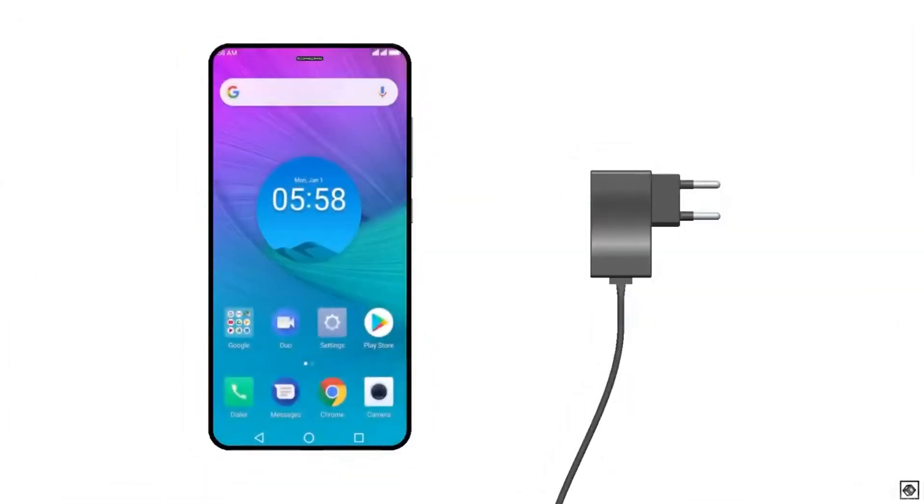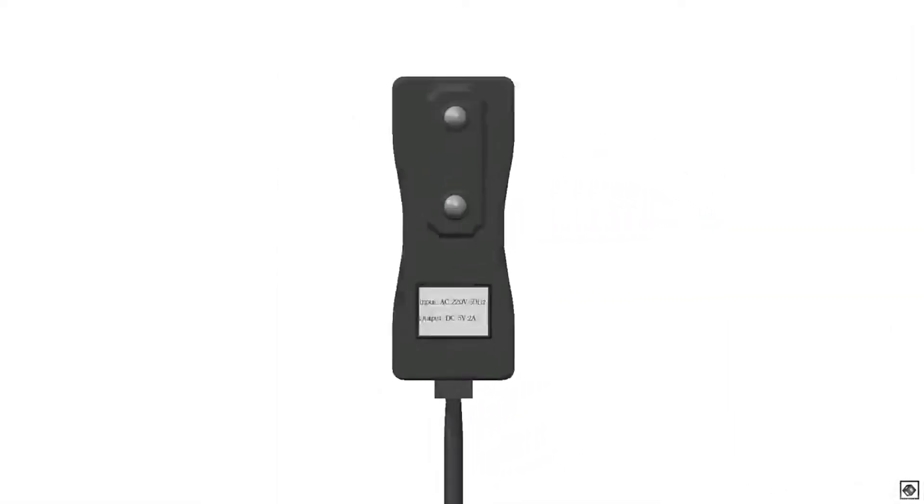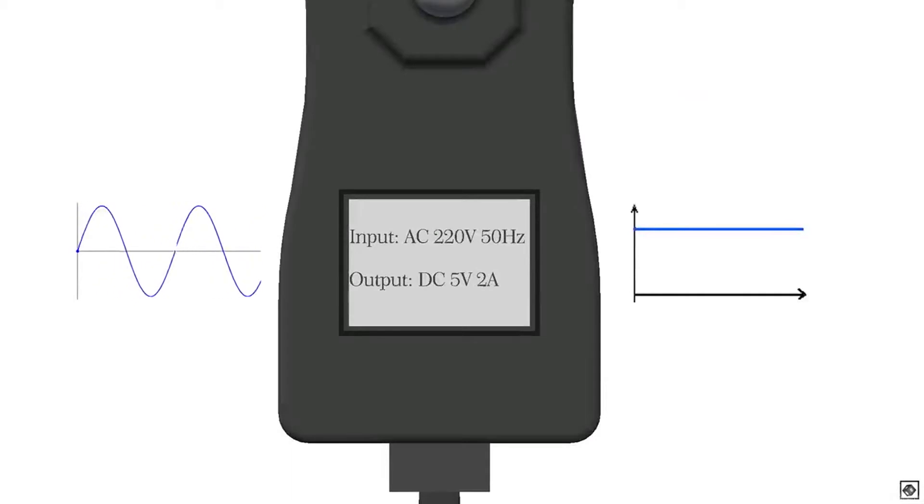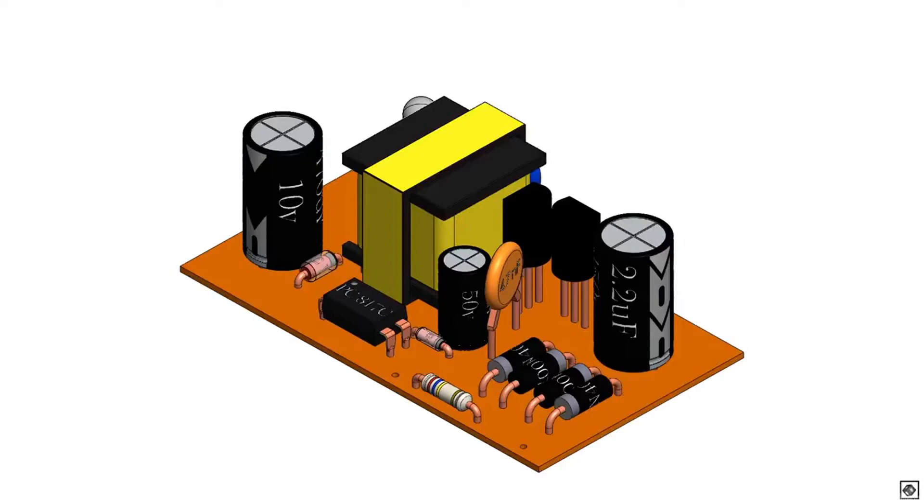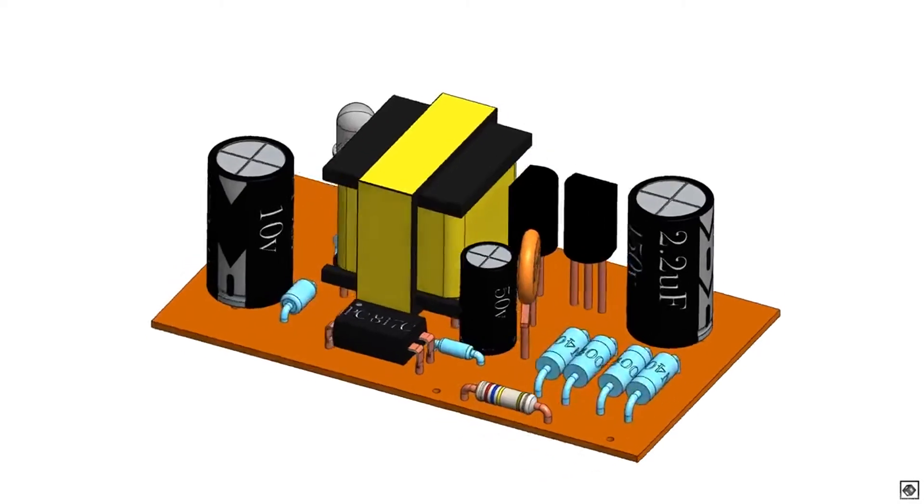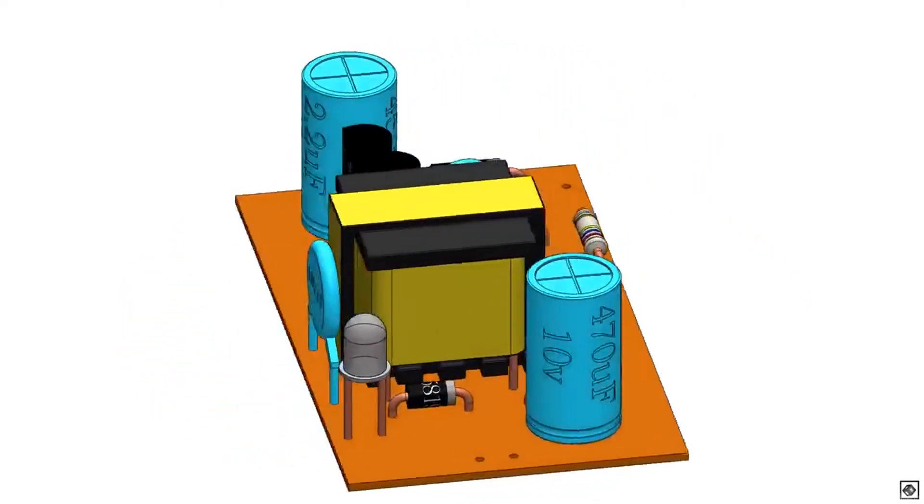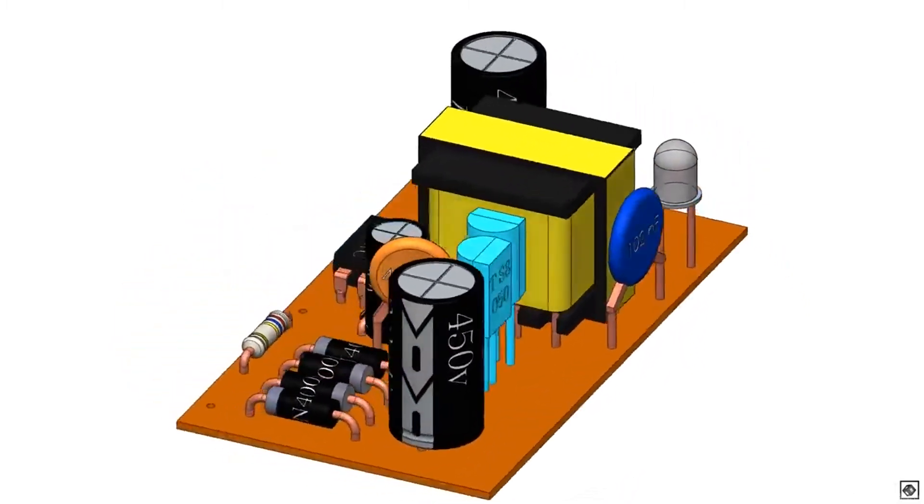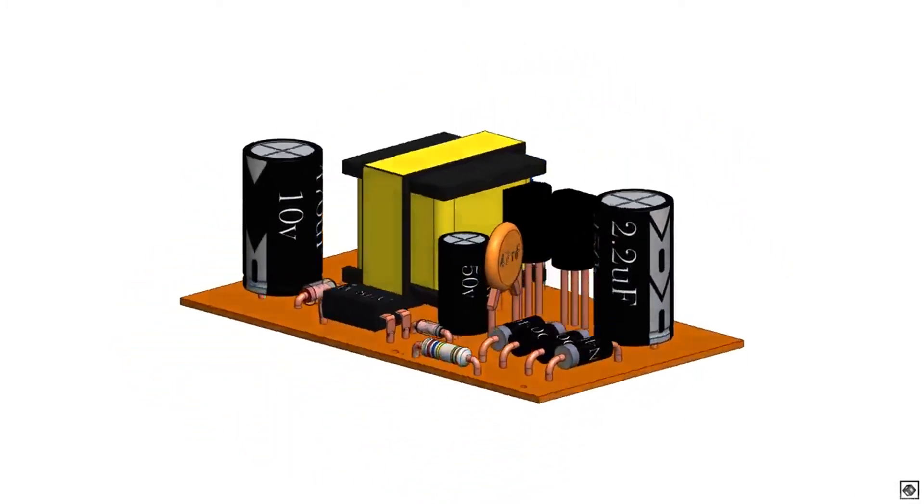This is a normal charger that converts 220 volts AC to 5 volts DC. Let's see what's inside. Now we can see all the electronic components used in it. There are diodes, capacitors, transistors, and resistors.